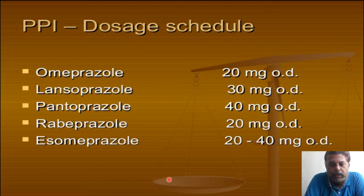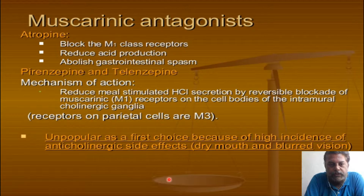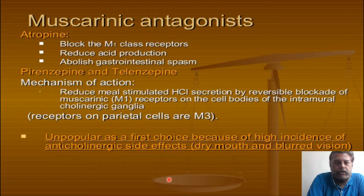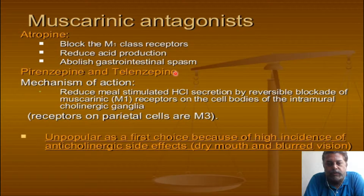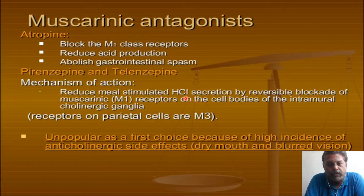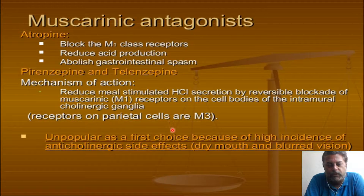Atropine is a muscarinic antagonist; it blocks M1 receptors, causing reduced acid production and abolishes gastrointestinal spasm. In patients with ulcers with spasm, muscarinic blockers can be given. Pirenzepine and telenzepine can also be given as they reduce meal-stimulated hydrochloric acid secretion by reversible blockage of muscarinic receptors on cell bodies of intraluminal cholinergic ganglia. However, they are very unpopular because they cause undue side effects of dry mouth, blurred vision, and bladder neck obstruction in elderly patients.